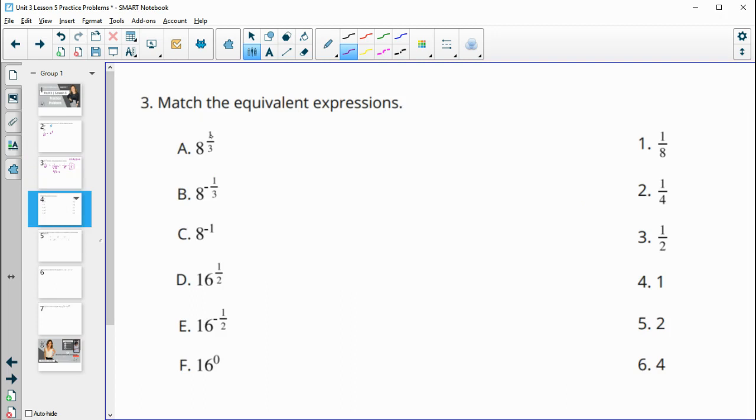Number three, match the equivalent expressions. So I see this 1 3rd power here with the 8th. So let's look at a couple of things here. So 1 to the 3rd power is 1 because it's 1 times 1 times 1. 2 to the 3rd power, 2 times 2 is 4 times 2 is 8. So we know that 8 to the 1 3rd power is 2.